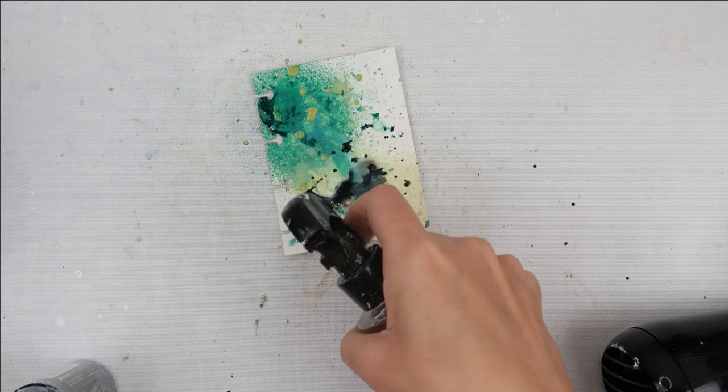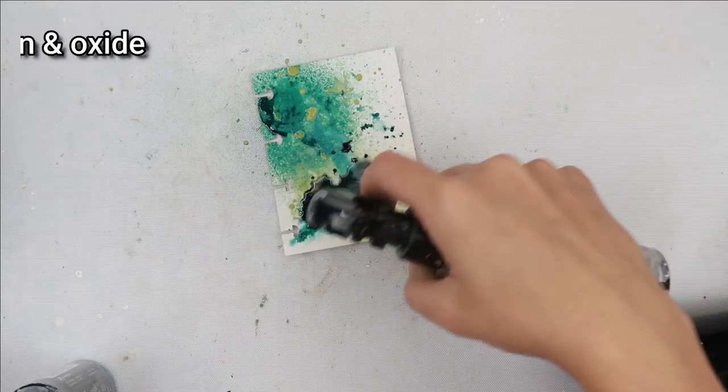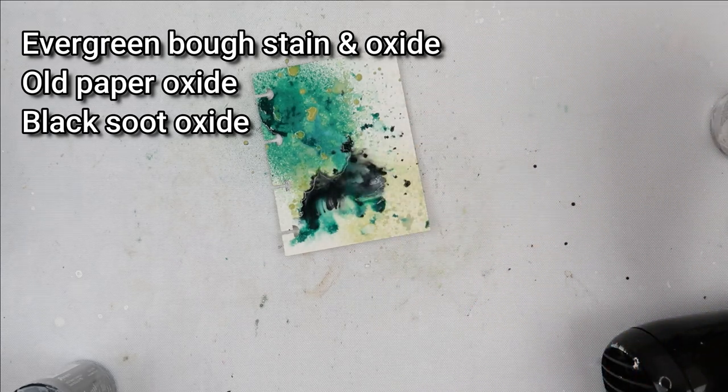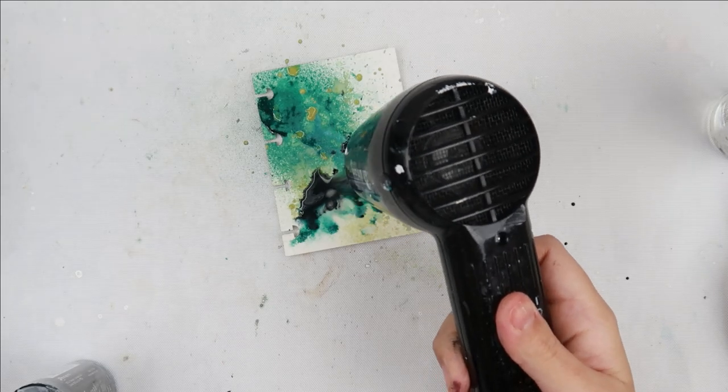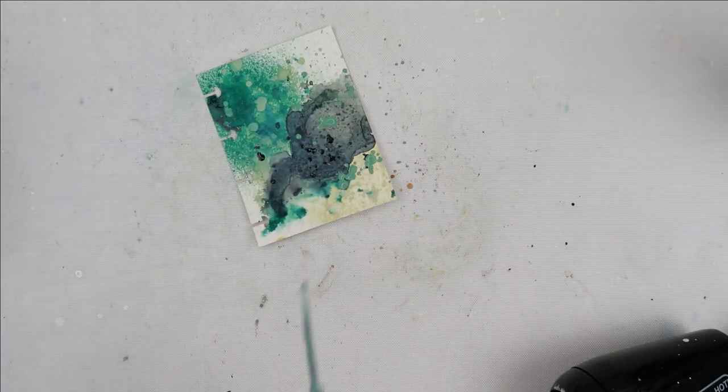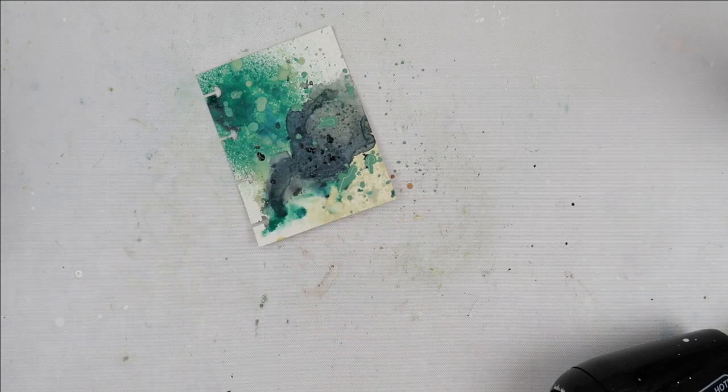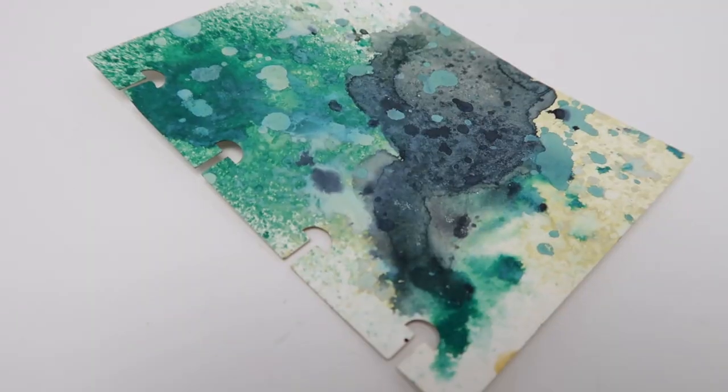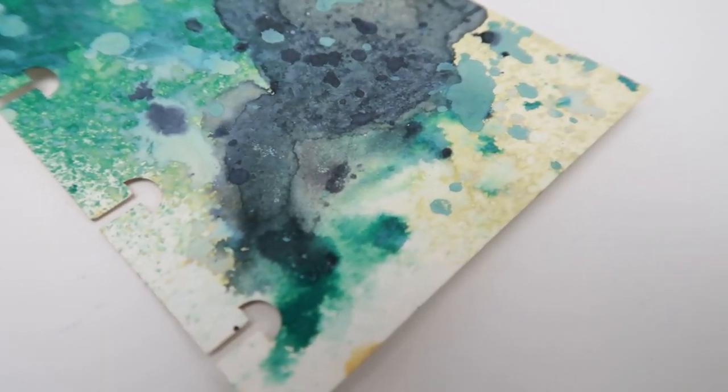So the colors I used in this color combination are Evergreen Bough Spray Stain, Old Paper Oxide, and Black Soot Oxide. After I dry that I am going to splatter on some Evergreen Bough Oxide spray and a little bit of Old Paper Oxide spray and as you can see it looks amazing.